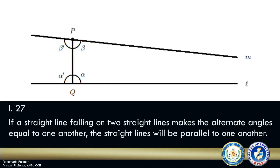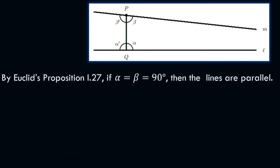We will use Euclid's 27th proposition. It states: if a straight line falling on two straight lines makes the alternate angles equal to one another, the straight lines will be parallel to one another. By this proposition, if alpha is equal to beta and equal to 90 degrees, then the lines are parallel. Note that if alpha equals 90 degrees and beta also equals 90 degrees, this will make beta prime equal to 90 degrees as well. Hence, alpha equals beta prime, and this makes the alternate interior angles congruent. So by the 27th proposition, line M and line L are parallel.